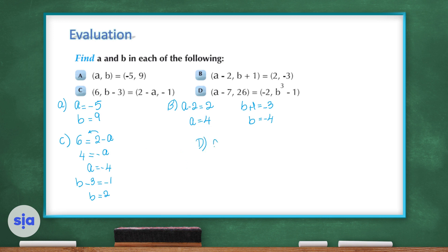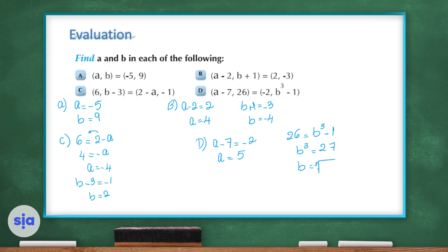Question D: a minus 7 equals negative 2, so a equals 5. To find b: 26 equals b cubed minus 1, so b cubed equals 27, meaning b equals the cube root of 27, so b equals 3.